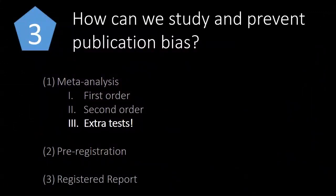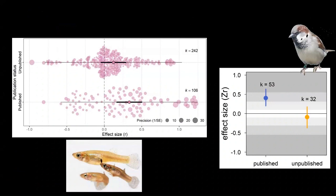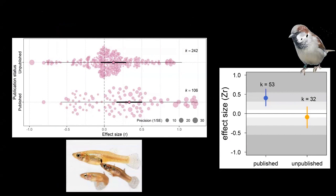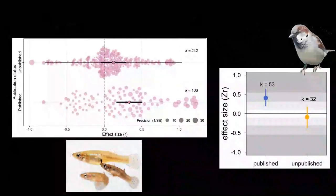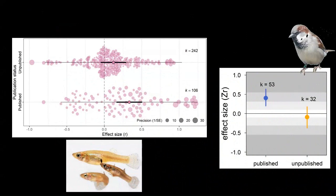You can also do extra tests to study publication bias: for example, comparing published versus unpublished data if you have access through open datasets or by contacting authors; testing whether blinding data collection affects results; or testing whether studies that report results selectively or incompletely tend to provide stronger effects. These are many types of tests to see if there's any evidence for publication biases.